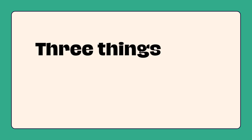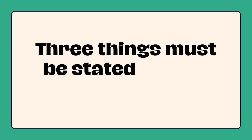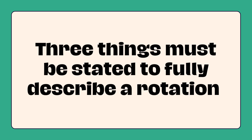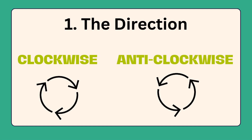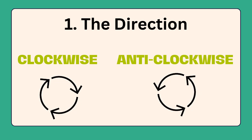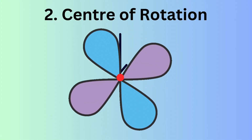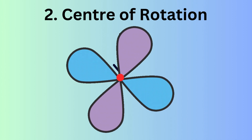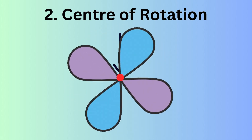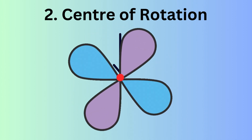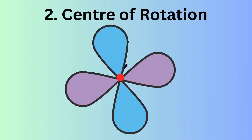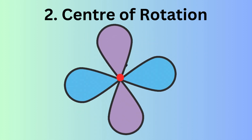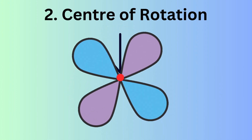Three things must be stated to fully describe a rotation. 1. The direction — this can be clockwise or anticlockwise. 2. The center of rotation — this is the point about which the object is rotated. It's the point that remains stationary while the object or figure moves in a circular path.